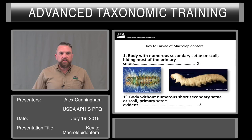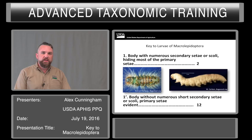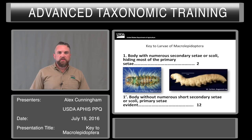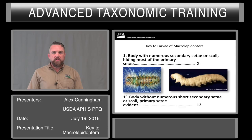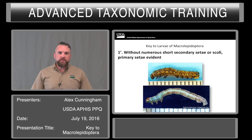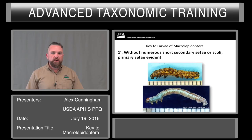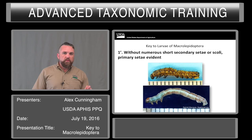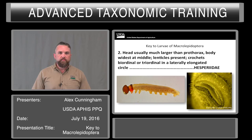Our first couplet talks about the vestiture of the insect. Body with numerous secondary setae or scoli hiding most of the primary setae, versus body without numerous short secondary setae or scoli with primary setae evident. These secondary setae can be very long or very short — at a distance it looks almost velvety, but under magnification you'll see more than just the simple primary setae. Without numerous short secondary setae, only the primary setae will be evident and are not covered with a vestiture.